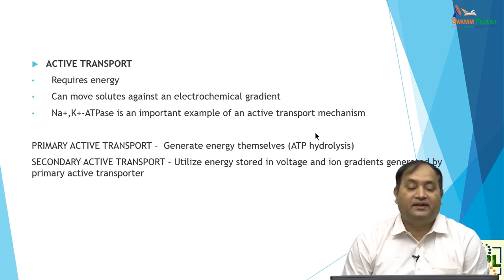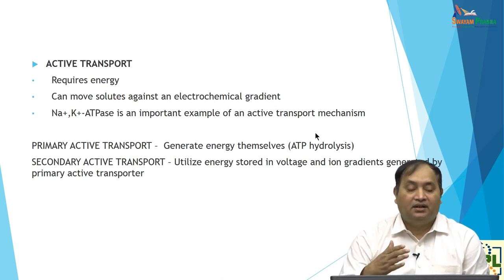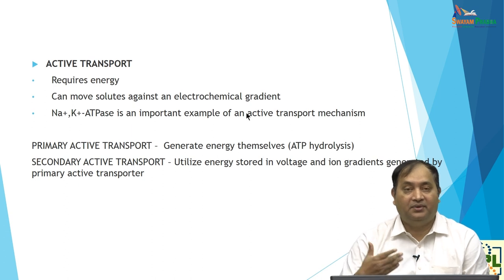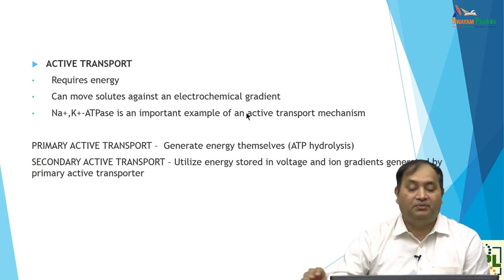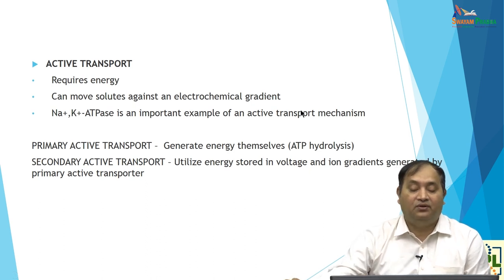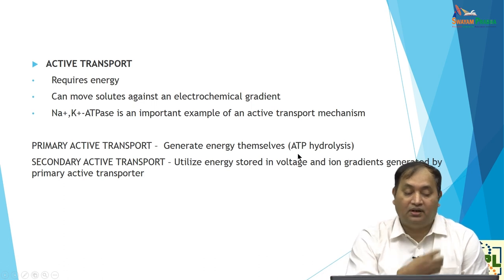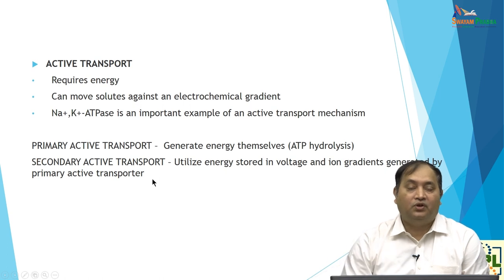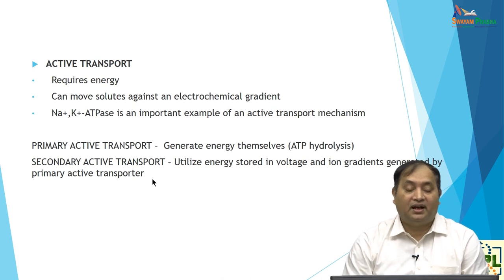In active transport, the movement of solute occurs against the electrochemical gradient and requires energy. The example of digoxin acts through the sodium-ATPase transport system. Active transport can be divided into primary active transport, which requires energy causing ATP hydrolysis, and secondary active transport, which utilizes the stored voltage gradient generated by the primary active transporter.